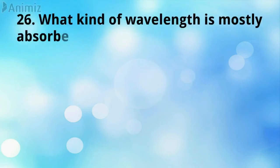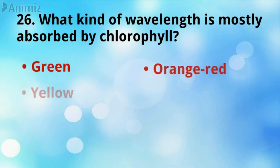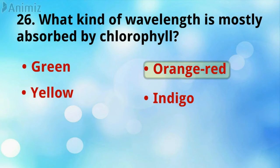What kind of wavelength is mostly absorbed by chlorophyll? The answer is orange-red.